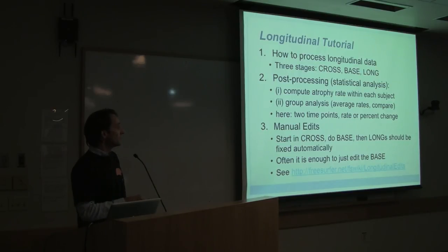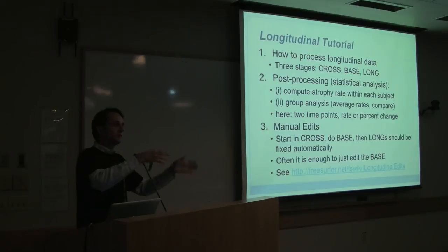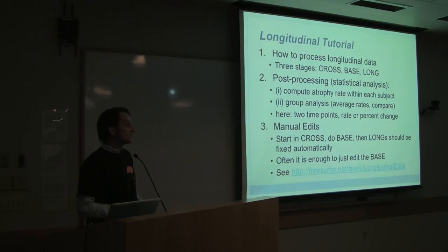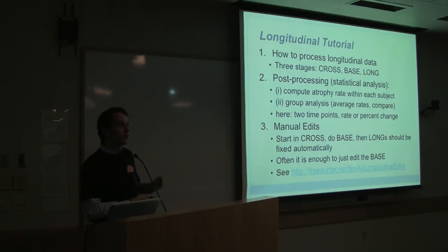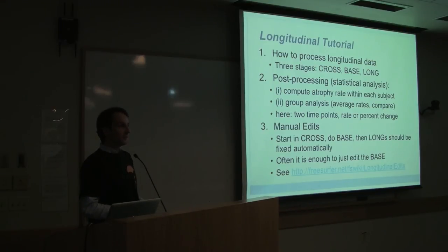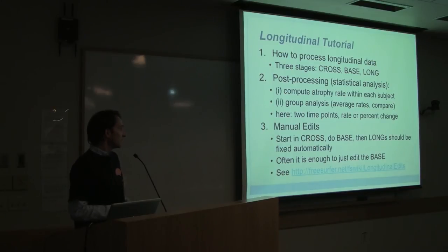We'll also look at manual editing. Manual editing in the longitudinal stream is more complex than in cross-sectional because you have all three stages. The basic story is: you start editing the cross-sectionals, check the base, and then the longitudinal should be fine without further editing. Sometimes you can only edit the base template, which is convenient when you have five time points for a subject — you only need to edit one image instead of all five. There is a wiki page on longitudinal edits, and some of this is covered in the tutorial.